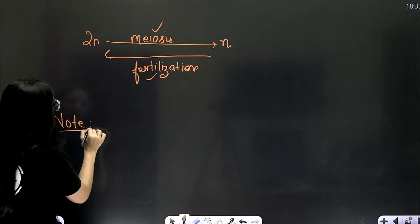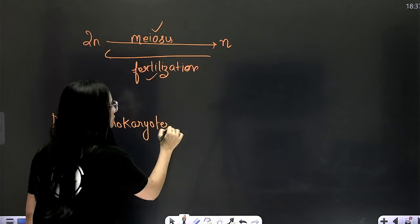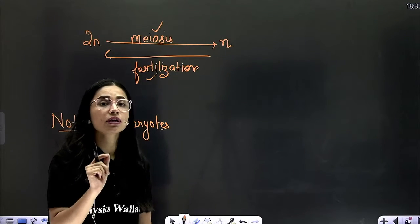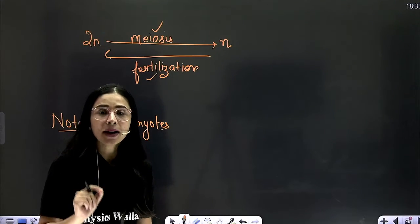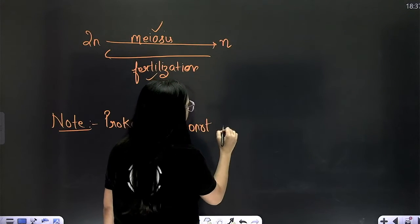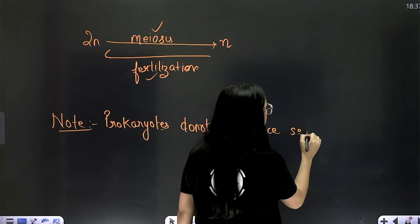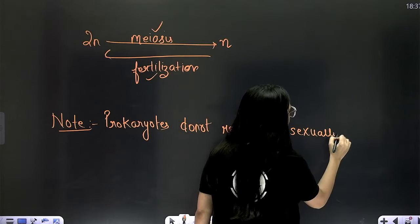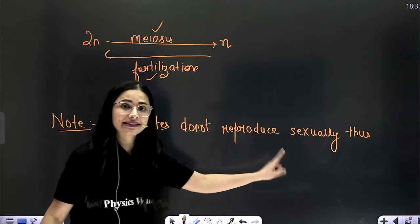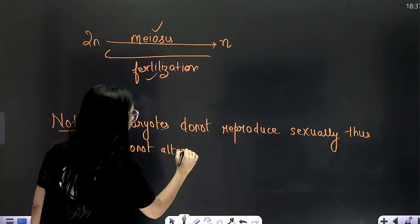Just a small note point. Bacteria, prokaryotes do not show sexual reproduction. Right? Prokaryotes do not reproduce sexually. They only reproduce asexually by fission method. Thus, since they do not reproduce sexually, thus do not show alternation of generation.